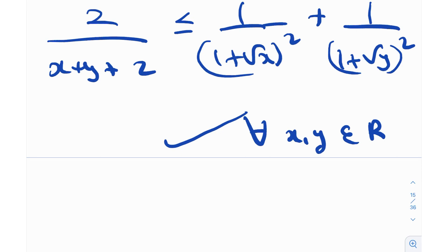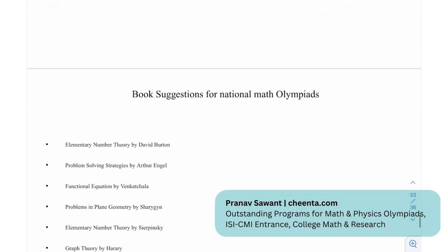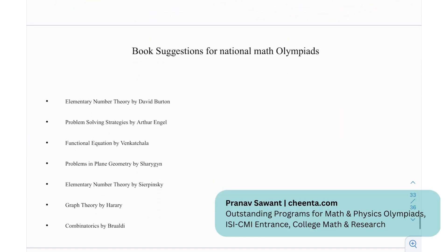The Cauchy-Schwarz inequality is arguably the most used inequality after AM-GM, and as we showed here, it can very well be used alongside AM-GM to solve some really nice problems in inequalities.